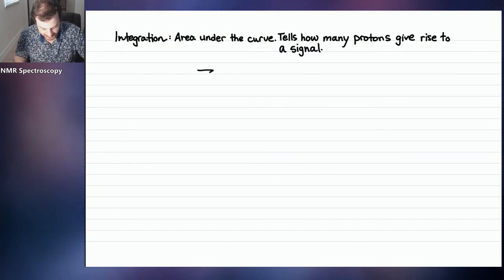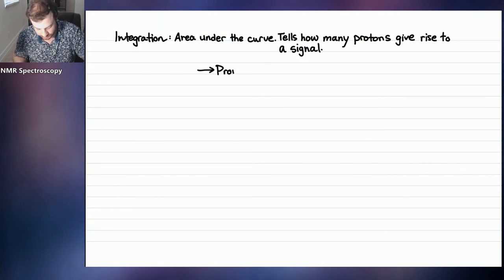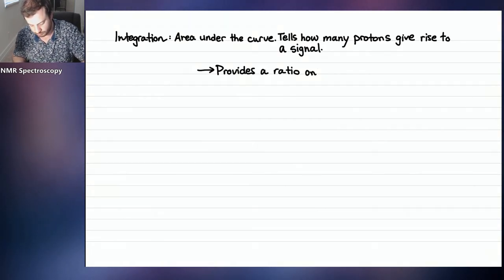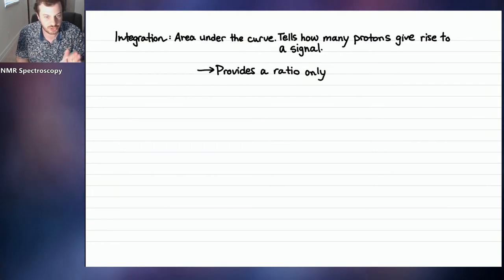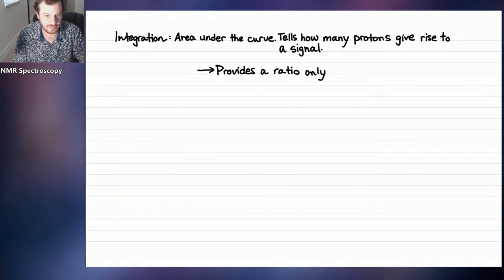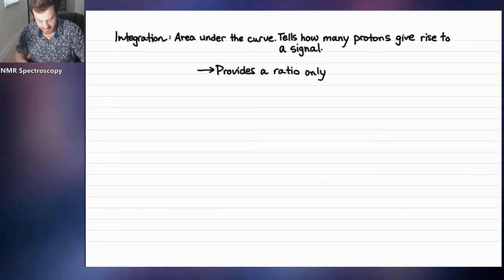Keep in mind that integration provides a ratio only. We don't know if it's one to two, or two to four, or four to six — it's just a relative amount. So it may not give you the exact number of protons.